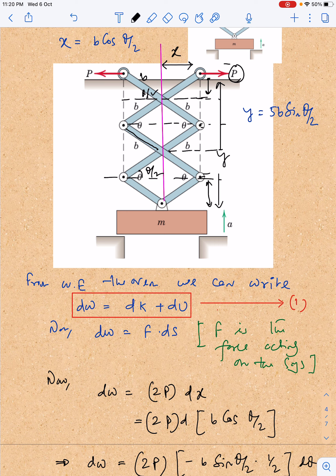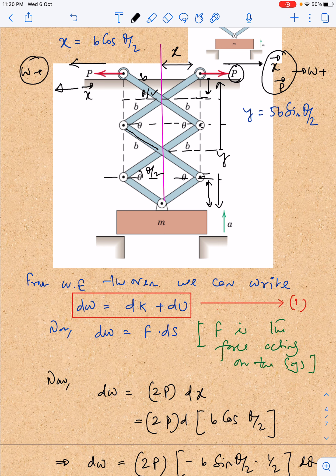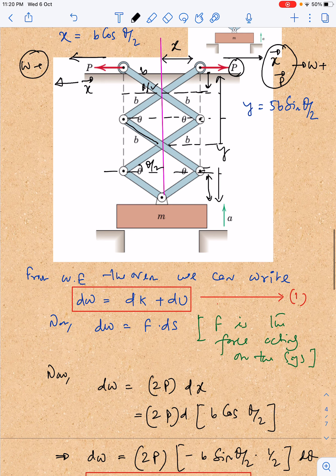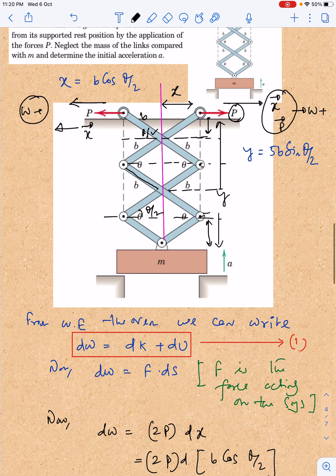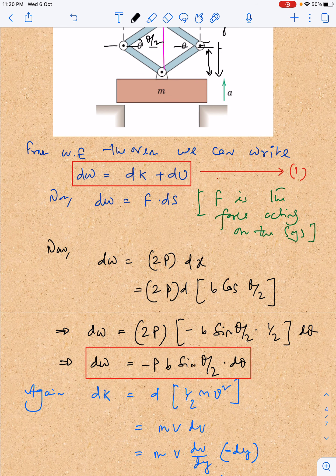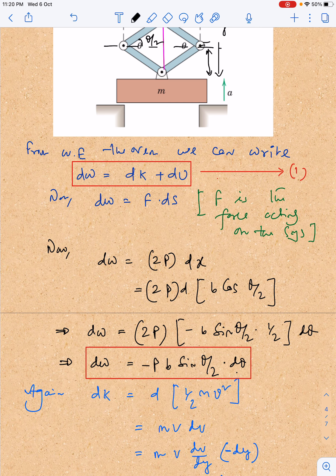If you think about this P, displacement is in the direction, so force and displacement are in same direction, so work done is positive. If you think about this force on the left hand side, this P is in that direction and displacement also in the same direction, so this work done is also positive. That is why it becomes 2P dx. Now x you already got to be b cos theta by 2, so if I apply that, then this calculation will become dw equals minus pb sin theta by 2 d theta. The calculation part you can check on your own; I am not going into the details.